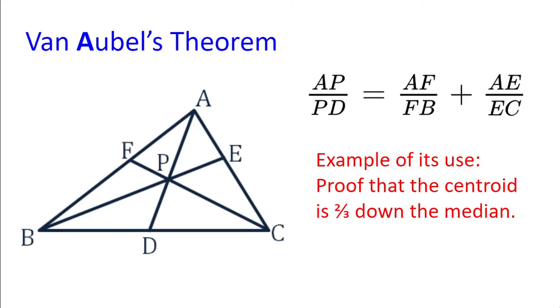First up we have Bernoulli's theorem which states that if AD, BE and FC all intersect at one point P, then AP divided by PD equals AF divided by FB plus AE divided by EC.